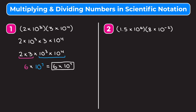In example two, we have 1.5 times 10 to the sixth times 8 times 10 to the negative second. We rewrite this as 1.5 times 8 times 10 to the sixth times 10 to the negative second. Multiplying 1.5 times 8 gives us 12. Then adding the exponents, 6 plus negative 2 gives positive 4, so we get 10 to the fourth. That gives us 12 times 10 to the fourth.